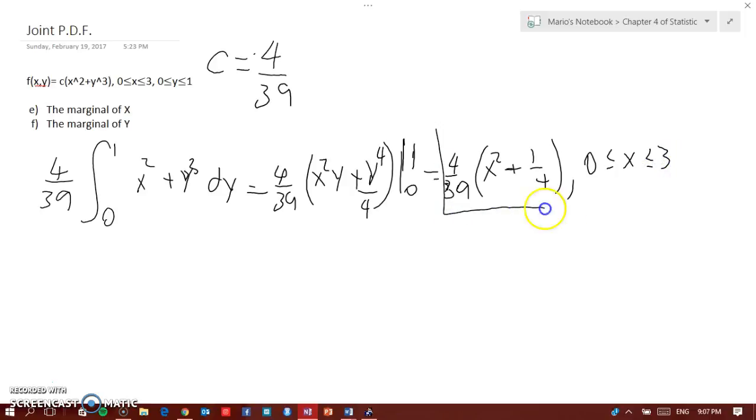This is the marginal PDF of X. Now the marginal PDF of Y is 4 over 39, the integral from 0 to 3 of x squared plus y cubed dx.